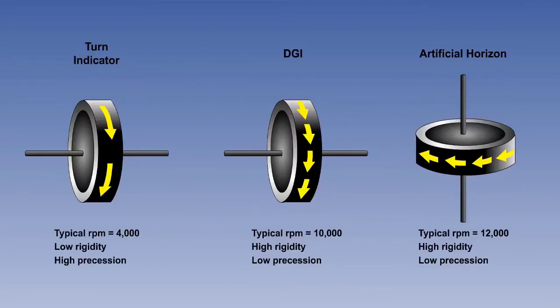The rotor RPM is low compared to the DGI and artificial horizon rotor speeds, because the turn indicator uses the gyroscopic property of precession to measure rate of turn. Lower spin speed means less gyroscopic rigidity, giving greater precession, so a high rotor speed is not required.